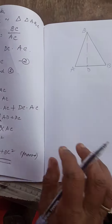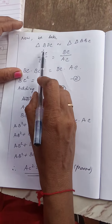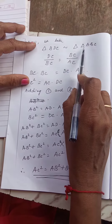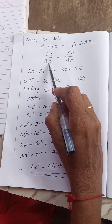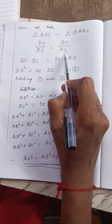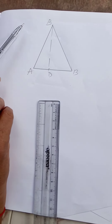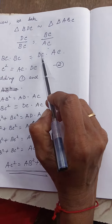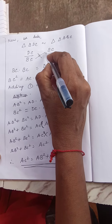Now let us go to the next step. Here, triangle BDC and triangle ABC. DC/BC is equal to BC/AC. Here, BC/BC into BC is equal to... we have to do cross multiplication here.